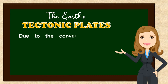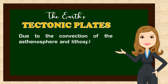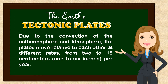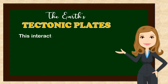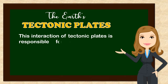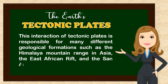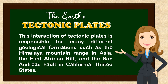Due to the convection of the asthenosphere and lithosphere, the plates move relative to each other at different rates, from 2 to 15 centimeters, or 1 to 6 inches per year. This interaction of tectonic plates is responsible for many different geological formations, such as the Himalaya Mountain Range in Asia, the East African Rift, and the San Andreas Fault in California, United States.